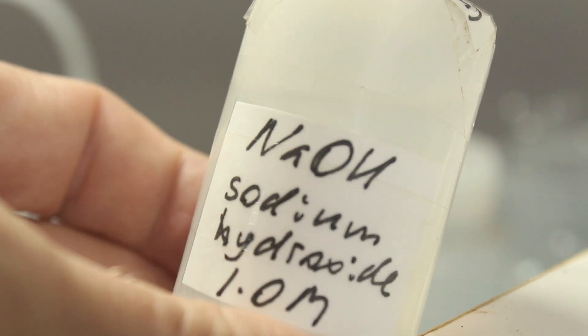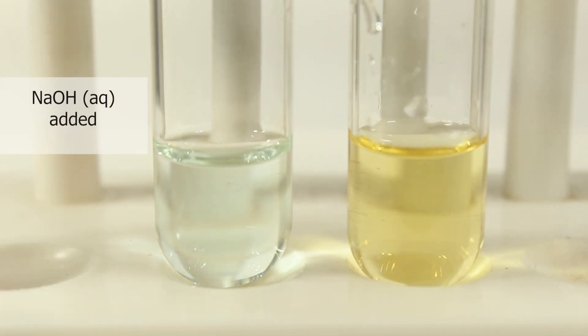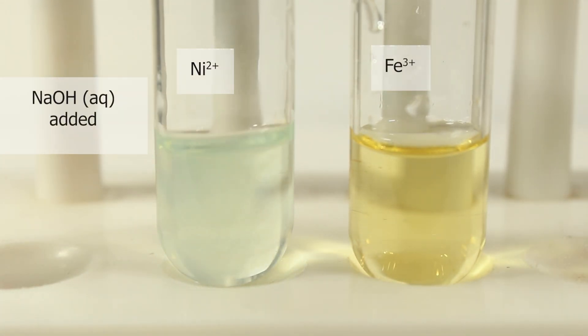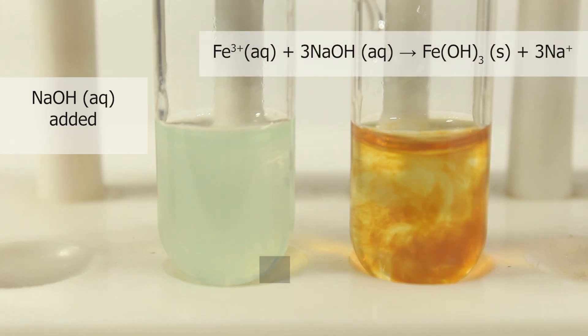Now sodium hydroxide. Precipitate supposed to be formed. First for nickel. So we expect something to happen. Yes, pale green precipitate. And now for iron-3. Our analytical test. Positive result for iron-3. Brown gelatinous precipitate of iron-3 hydroxide.